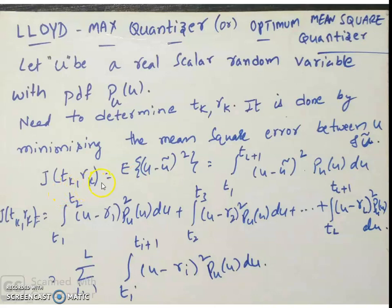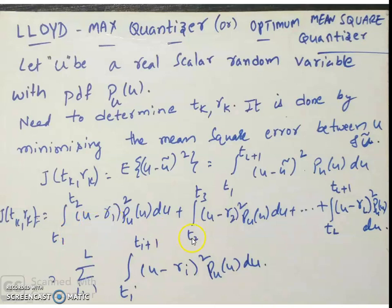So J(tk, rk) equals the expectation of (u minus u tilde) squared, which is the integral from t1 to tl+1 of (u minus u tilde) squared times pu(u) du. Splitting this interval from t1 to t2, t2 to t3, and so on up to tl to tl+1: when u is between t1 and t2, u tilde equals r1; if u is between t2 and t3, u tilde is r2; and so on — if u is between tl and tl+1, the value is rl.